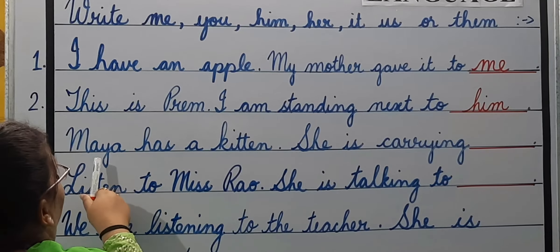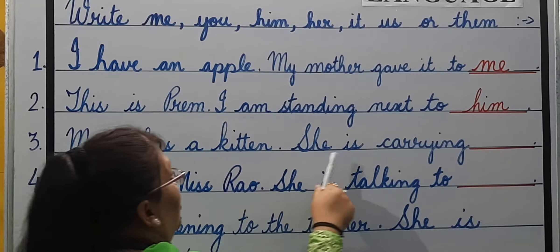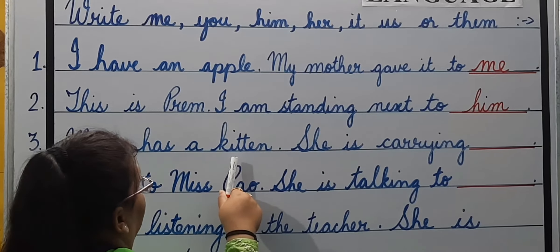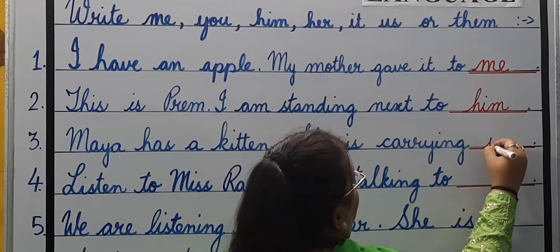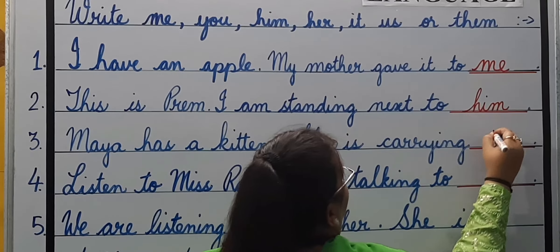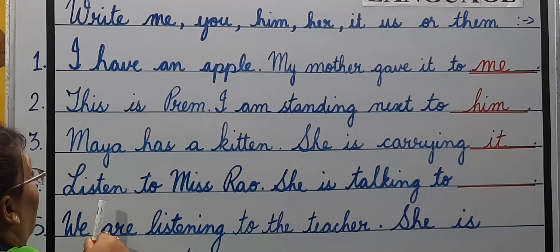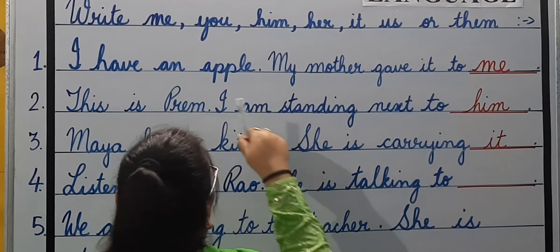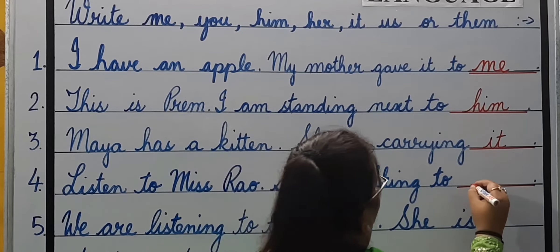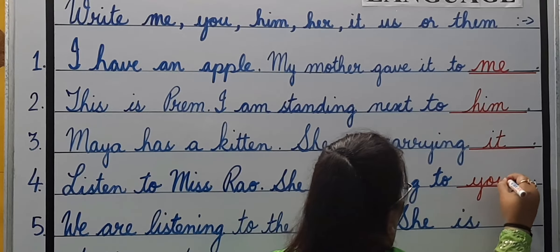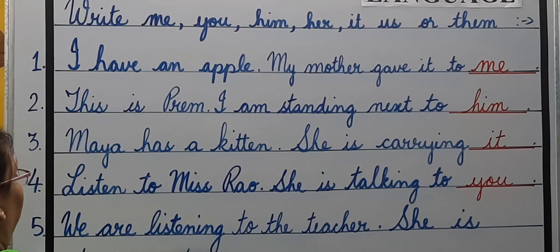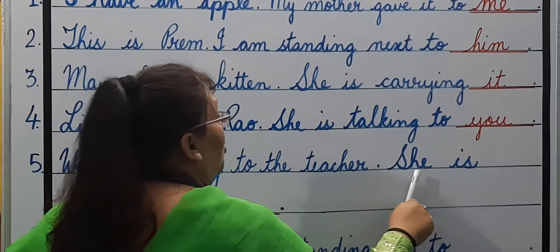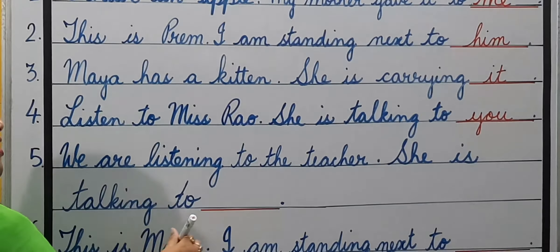Number three: Maya has a kitten. She is carrying — a kitten is an animal, so the answer is it. Number four: Listen to Miss Rau. She is talking to you. Number five: We are listening to the teacher. She is talking to us.